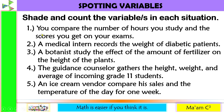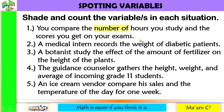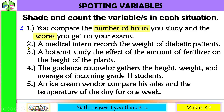Number one: you compare the number of hours you study and the scores you get on your exams. What could be the variables here? What could vary? The number of hours you study as well as the scores you get on your exams. We have two variables.